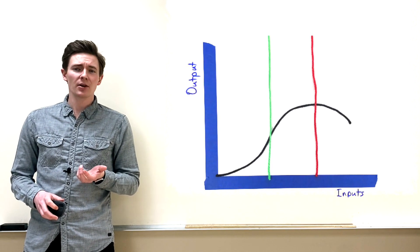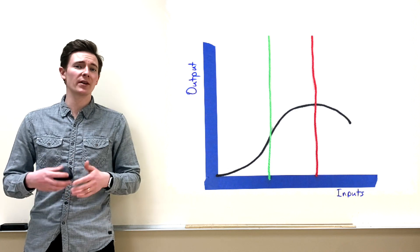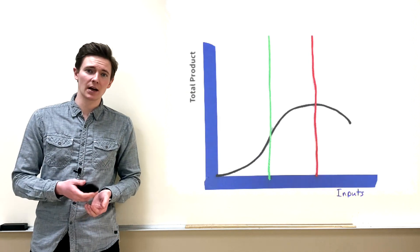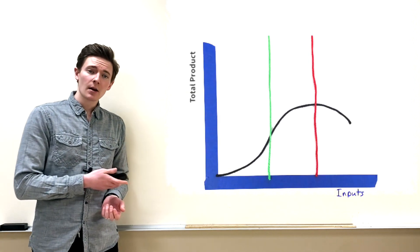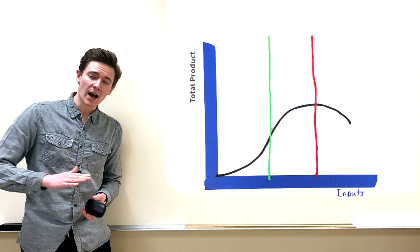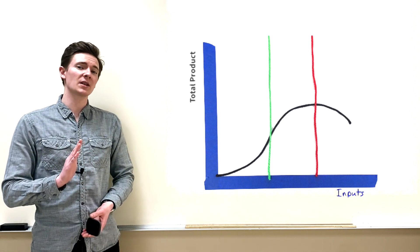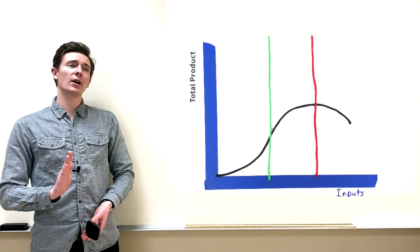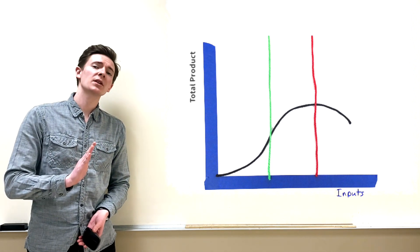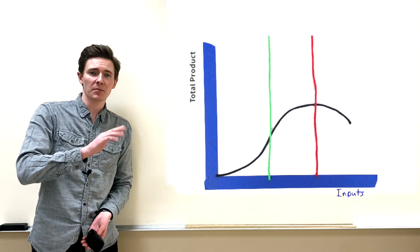The next thing we learned was the production function, which measures how much output is produced with various levels of an input. Early on, you start to see the production function rise at an increasing rate, but then there's a point where it's still increasing but the slope starts to become less steep.